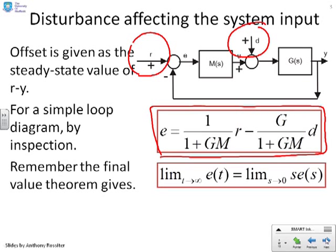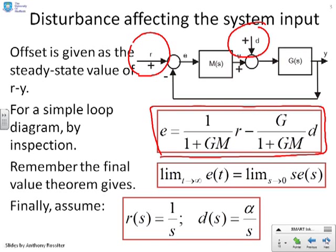We also remember the final value theorem tells us that the limit as T goes to infinity of E of T is the limit as S goes to 0 of S E of S. Finally, we're going to assume that the target is a step, 1 over S, and the disturbance is a stepwise disturbance, because otherwise you won't get a steady state. And we'll assume that the disturbance has magnitude alpha.